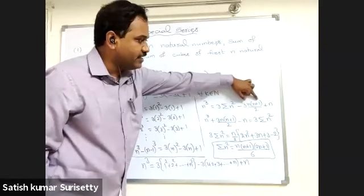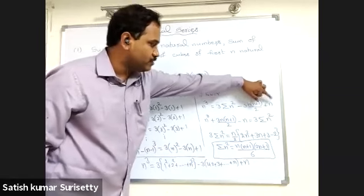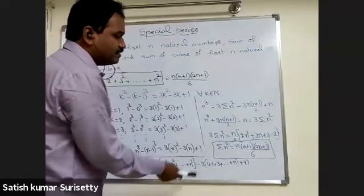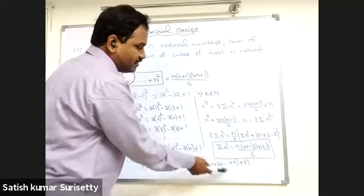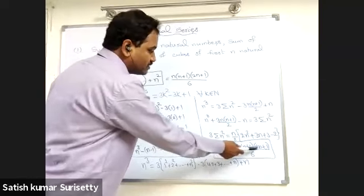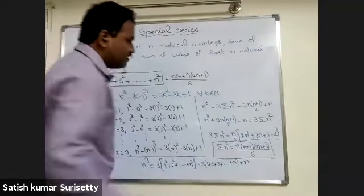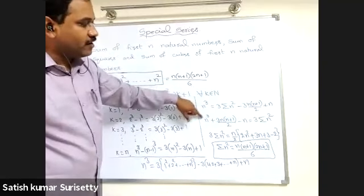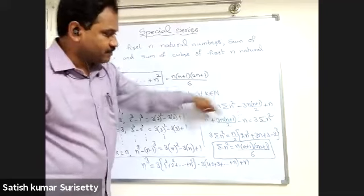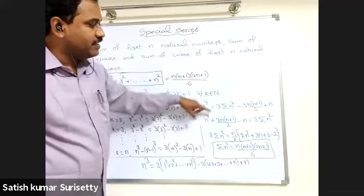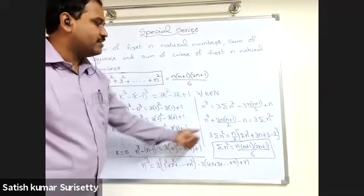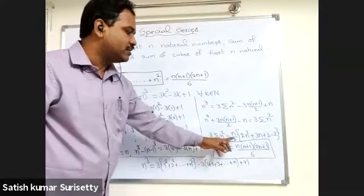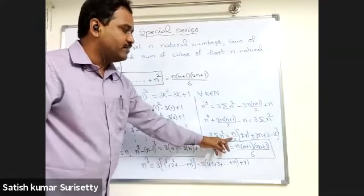Take the known term to the left side and simplify. Then you get sigma n squared as n into n plus 1 into 2n plus 1 upon 6. Here, instead of expanding first, always take common factors first. If you expand, it is very difficult to factorize. Whenever anything is common, take common first and then simplify.